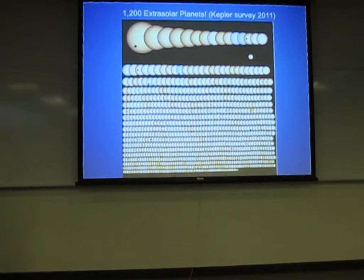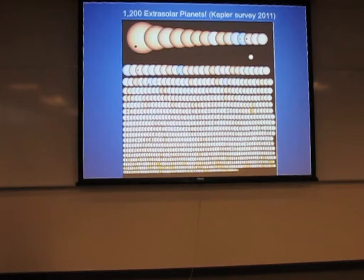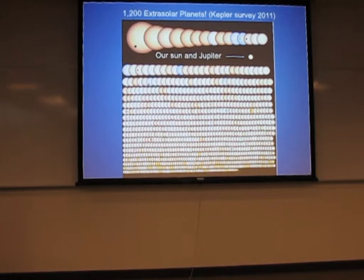These are stars and planets we now know have other solar systems. From the Kepler survey, it's now well over 2,000 extrasolar planets. Some are really big, some are smaller. If you look at each of those stars, every one of them has a little black dot — that's a planet, and that's how we detect them. When the planet passes in front of the star, we see a little dip in the light, and if that dip repeats every few days to a few years, the astronomer can figure out it's a planet. Our sun is about that size there, with Jupiter passing in front of it. We're the first generation of human beings ever to realize how the universe is inhabited by other planets and other solar systems.